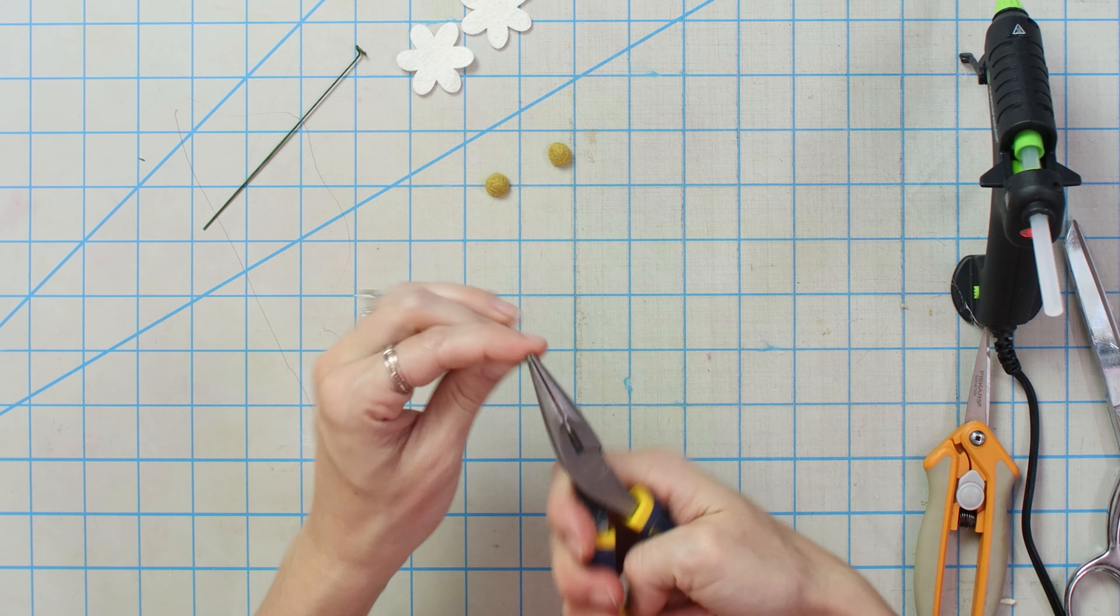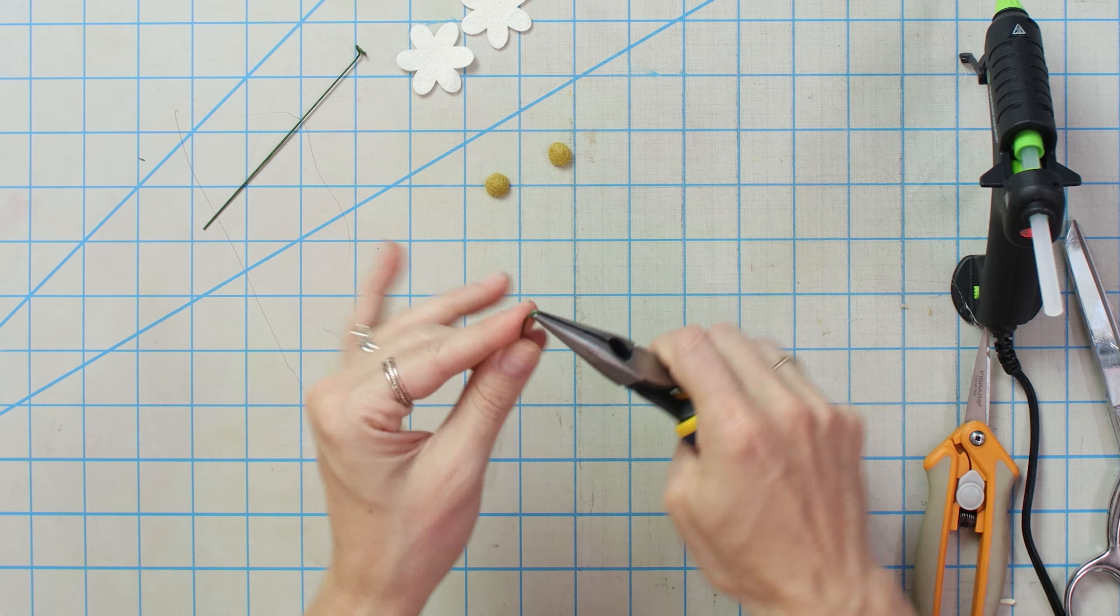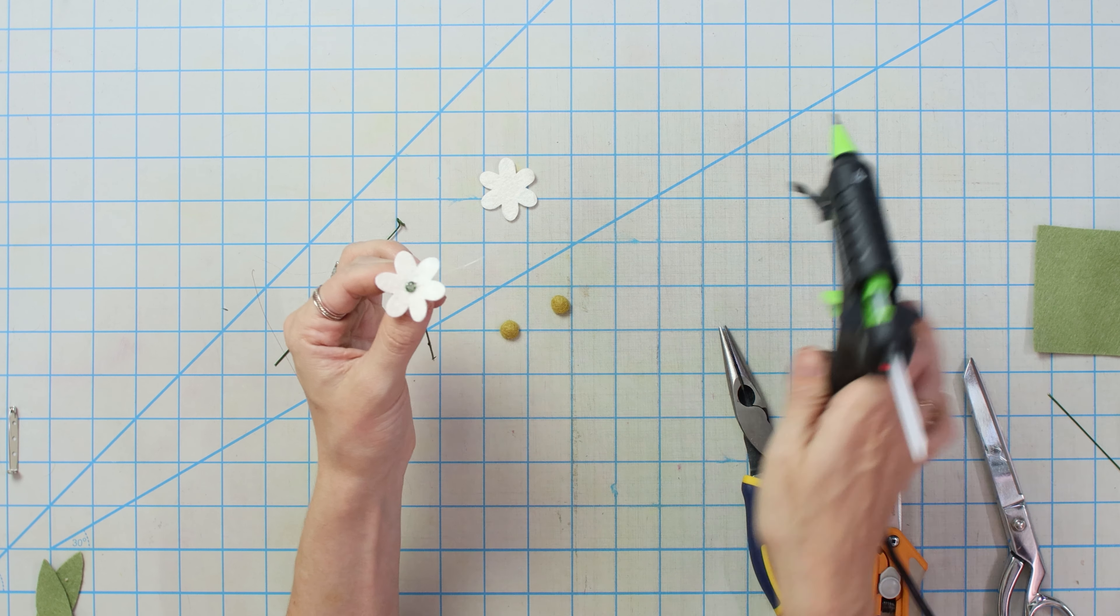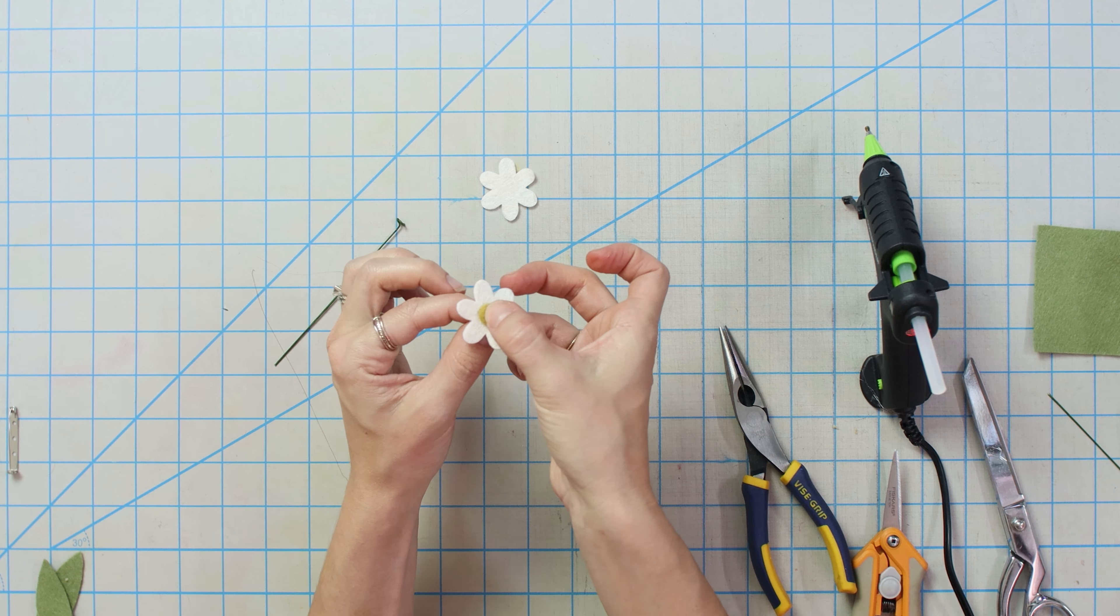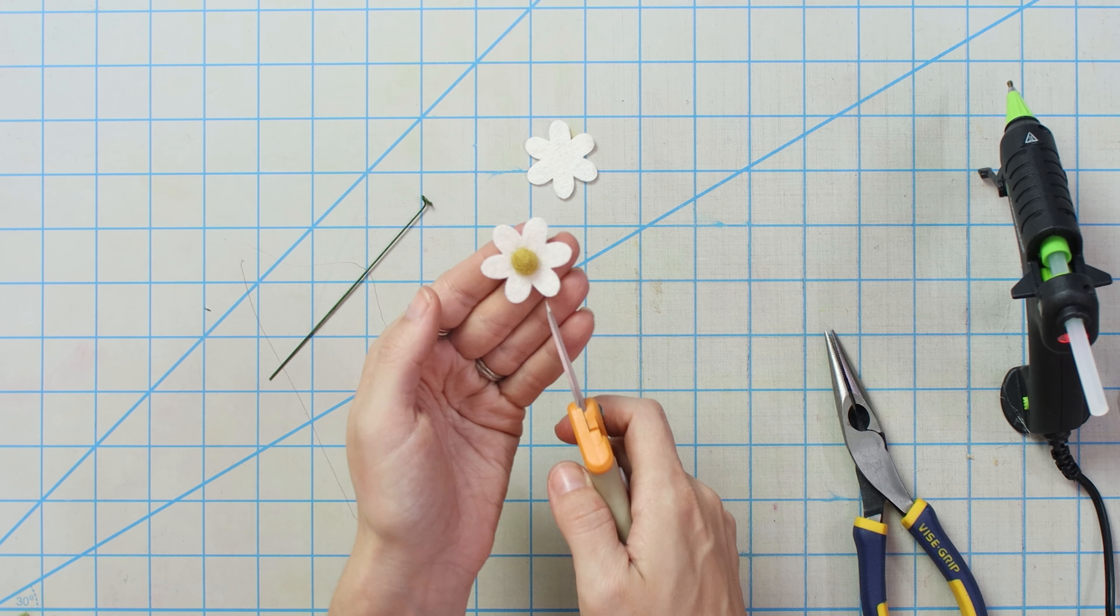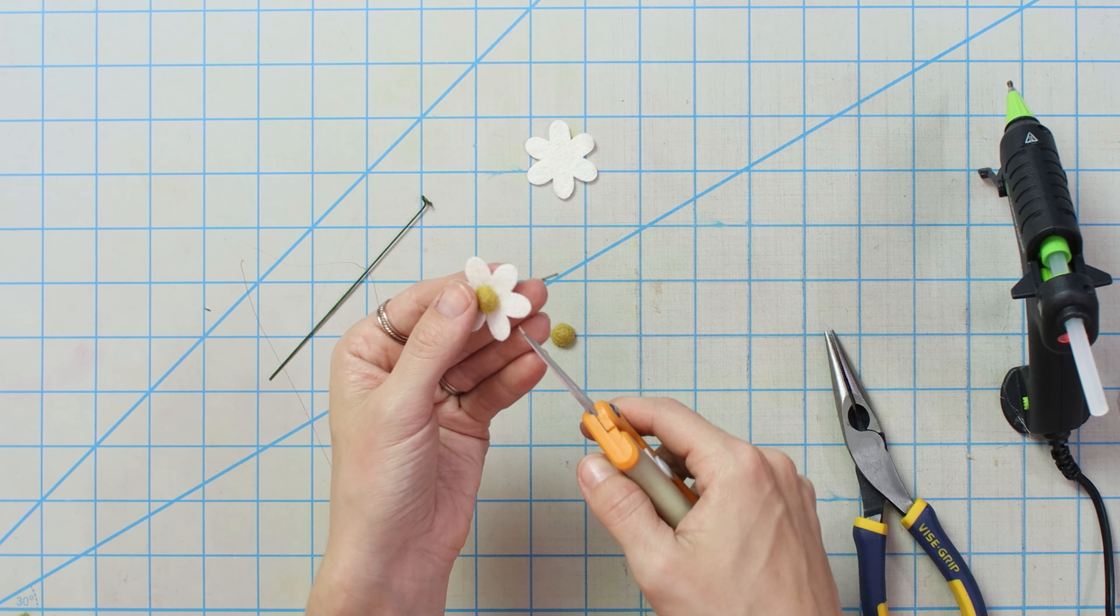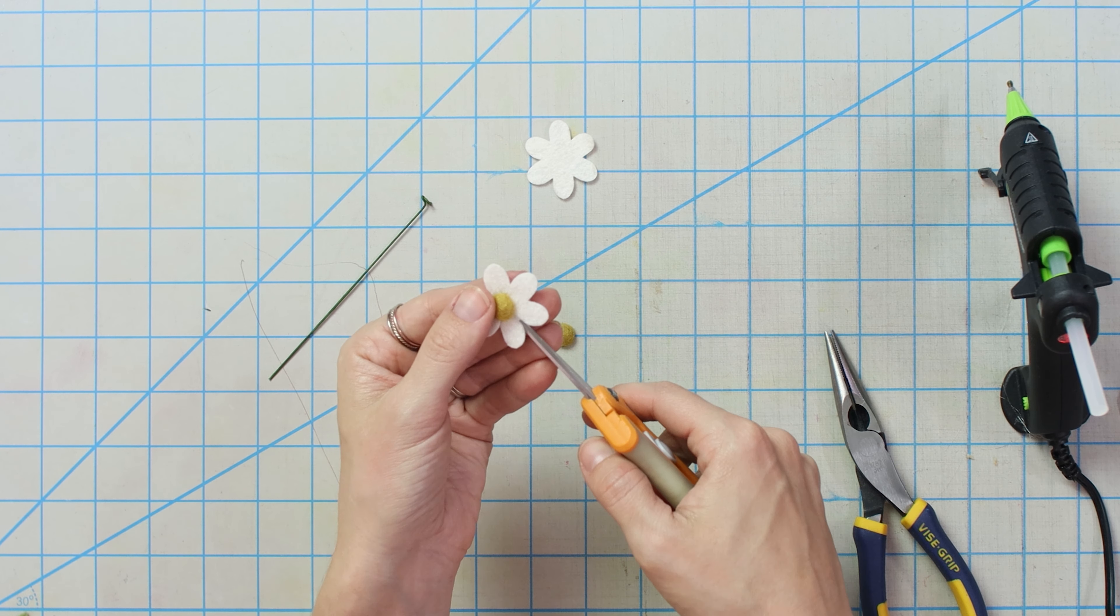Probably more than we need, but it's easier to cut wire off at the bottom than it is to add more. So we're going to make tiny little tables here for both of our flowers. We're going to fish it through the middle and then add one of our felt ball centers.